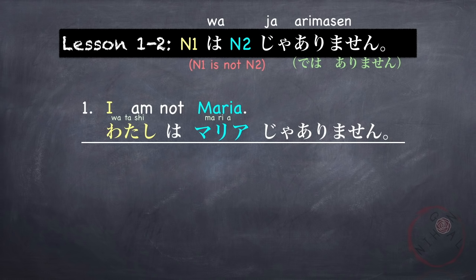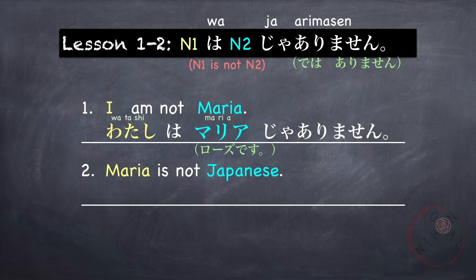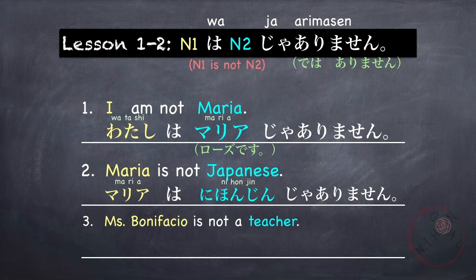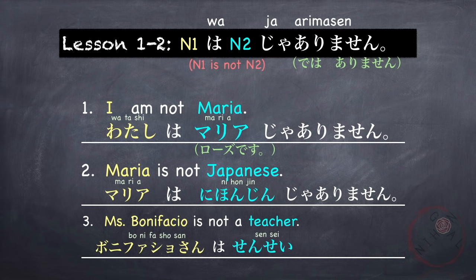I am not Maria — Watashi wa Maria ja arimasen — and you can follow this with a positive statement: Watashi wa Rose desu. I am not Maria; I am Rose. Another example: Maria is not Japanese — Maria wa Nihonjin ja arimasen. And: Miss Bonifacio is not a teacher — Bonifacio san wa sensei ja arimasen.